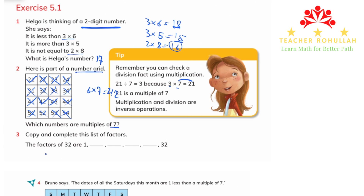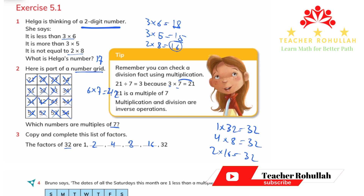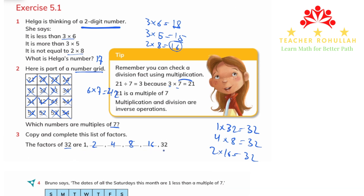In question 3 it says copy and complete this list of factors of 32. We can get 32 by multiplying 1 and 32, or by multiplying 2 and 16, or by multiplying 4 and 8. So the factors of 32 are 1, 32, 2, 16, 4, and 8.